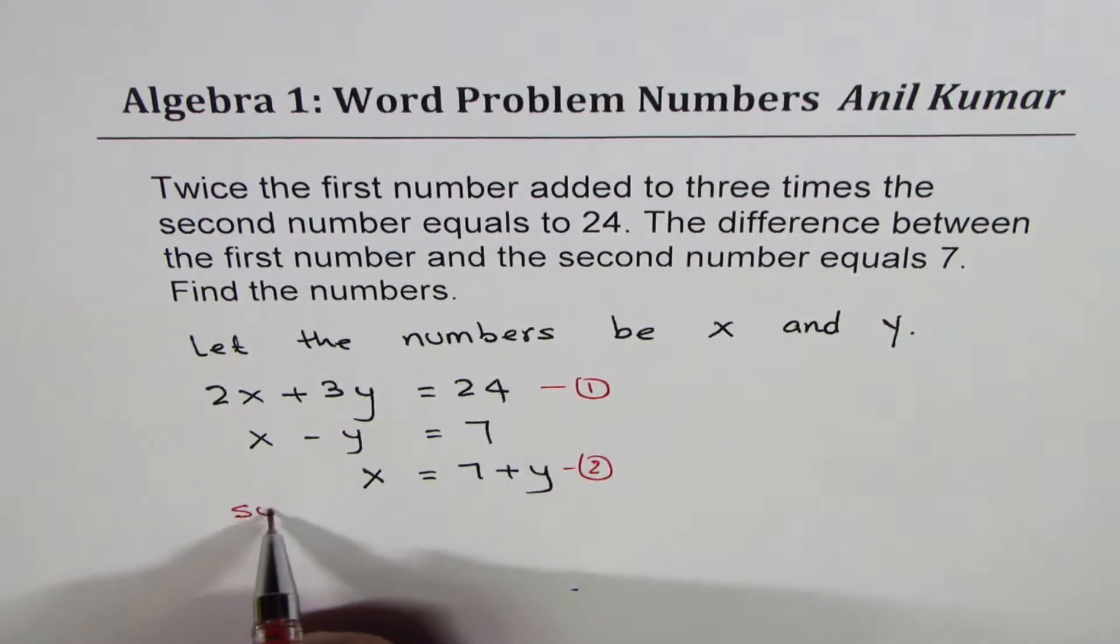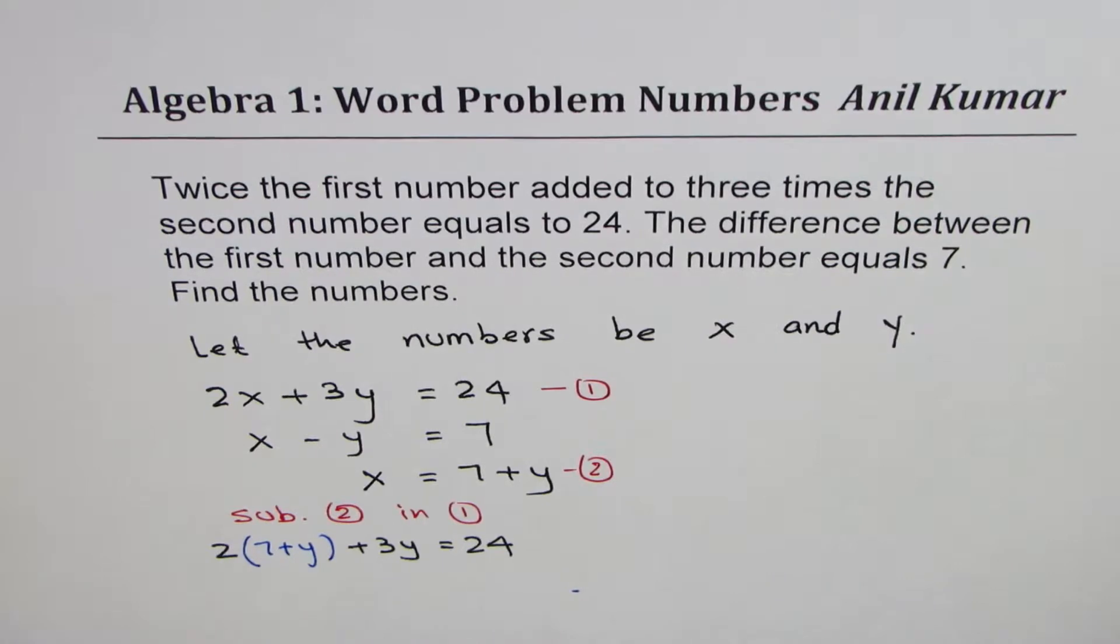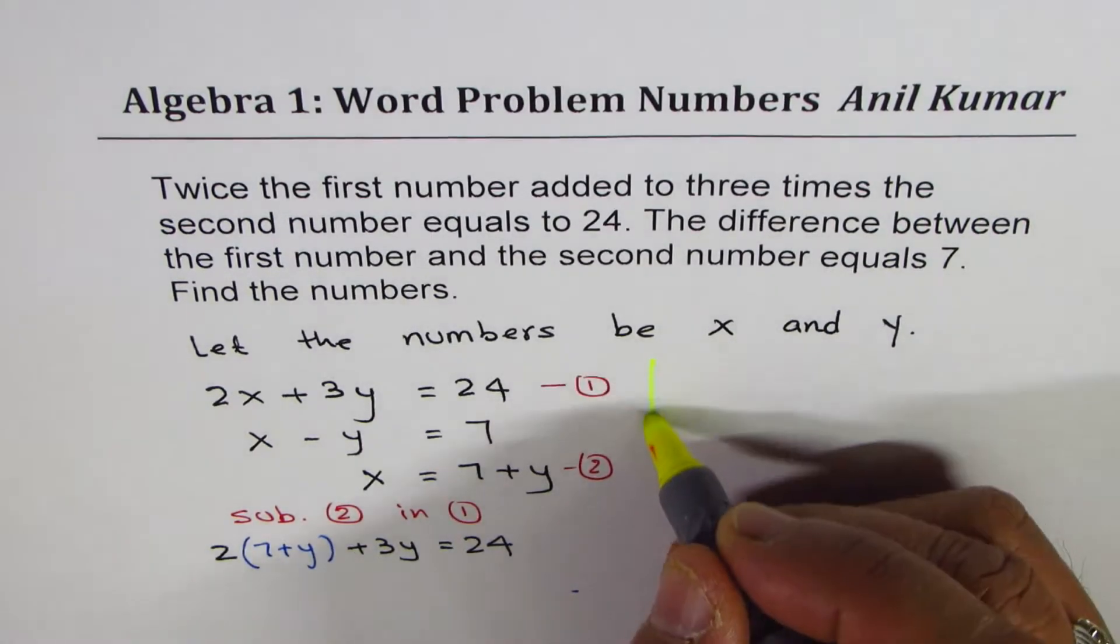Now if I substitute equation two in one, that means the value of x in one, what happens? So at that stage we have two times, and instead of x I will write seven plus y, plus 3y equals to 24. At this stage we have an equation only in y, one variable. This can be easily solved.